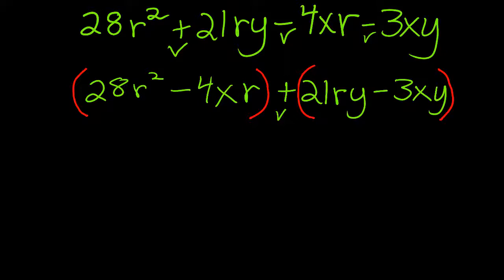And now I do not have to change this sign, because this sign is a plus sign. I'm going to factor by grouping. Don't forget that 28 is 4 times 7. R² is r times r. And so each of these terms in the first set of terms has a 4 and an r in it. I'm going to pull out the 4r as a GCF, and that will leave me with 7r minus x.